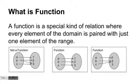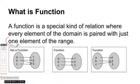And then what is function? A function is a special kind of a relation where every element of the domain is paired with just one element of the range. We need to highlight one here. So, a domain is paired with just one element, not two or more. For example, this one is not a function because of B. Notice that B is paired with 2 and 3 at the same time.